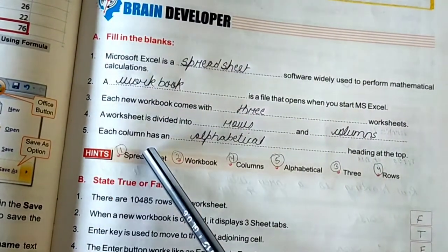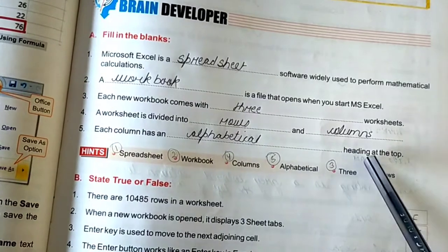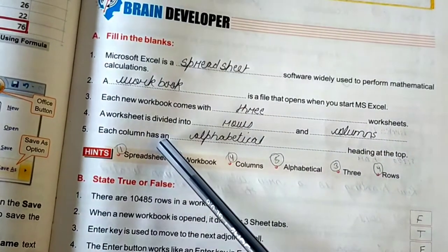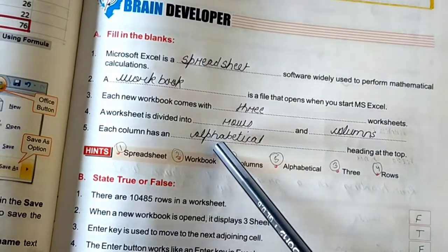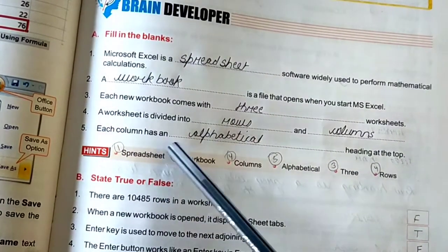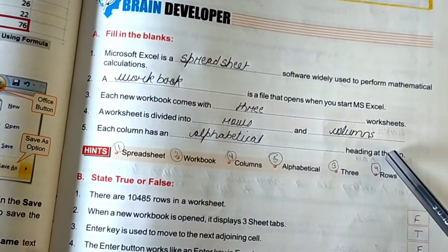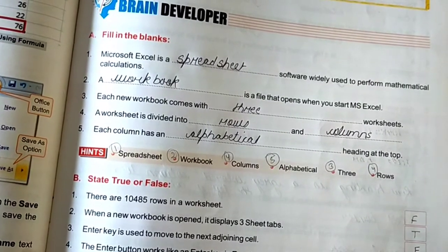Fifth, each column has a blank heading at the top. Each column has an alphabetical heading at the top. So, these are your fill-ups.